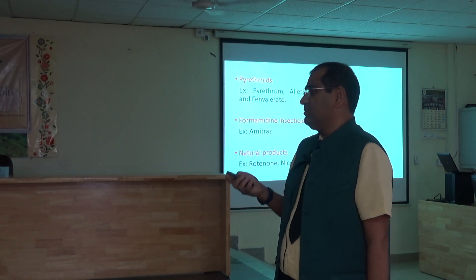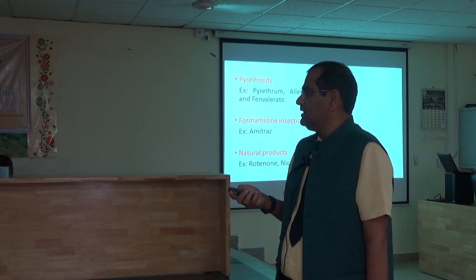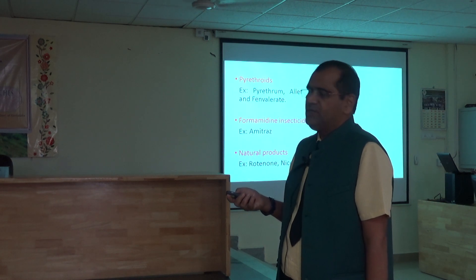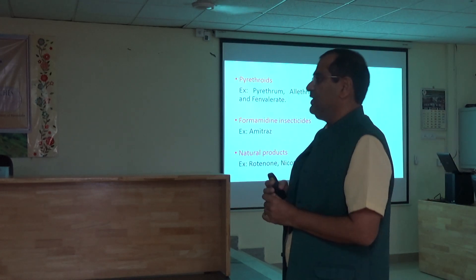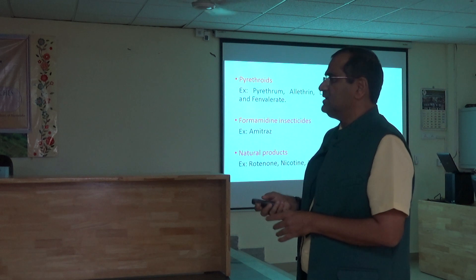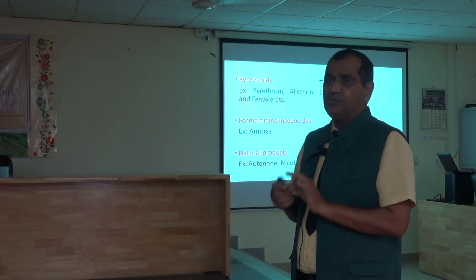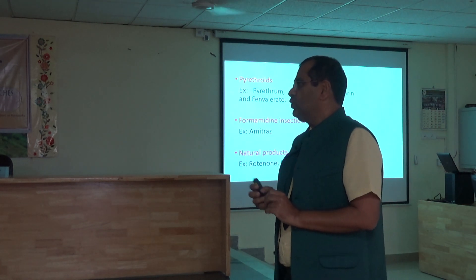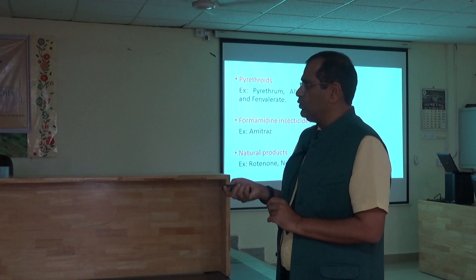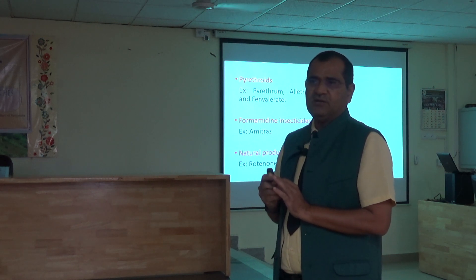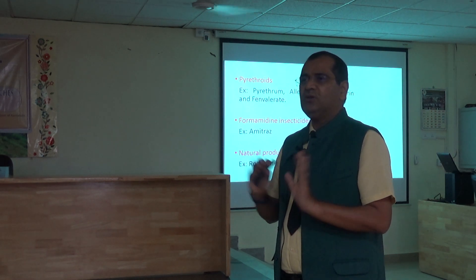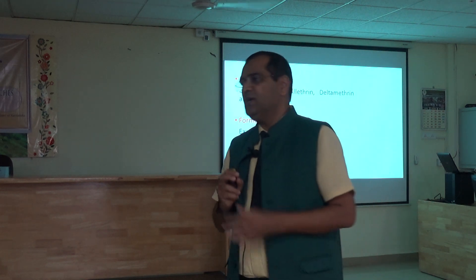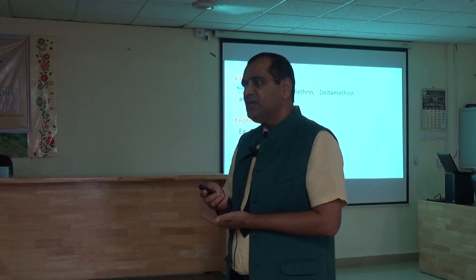Apart from these, some natural products are also used as insecticides — nicotine, avermectins, and formamidine (amitraz). These are all non-specific insecticides for which we do not have specific antidotes. Only for one or two do we have specific antidotes; for all others, there is no specific antidote — that is the first thing to remember.